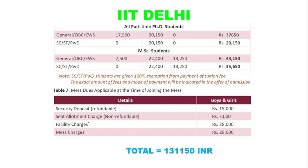This security deposit is refundable after completing your course or when you leave the institute hostel. The seat allotment fee is ₹7,000, which is really high — at most other IITs the seat allotment fee is around ₹500 to ₹1,000, and some IITs don't even charge a seat allotment fee at all. So ₹7,000 is really huge. On top of that, facility charges are around ₹28,000.